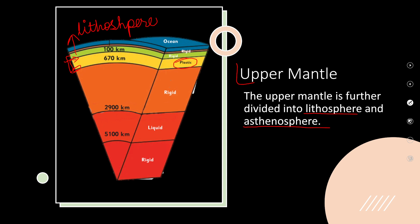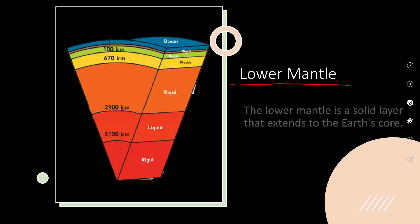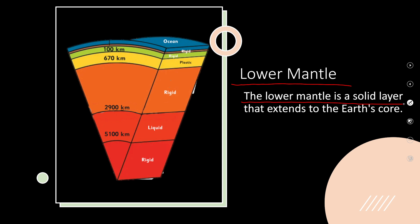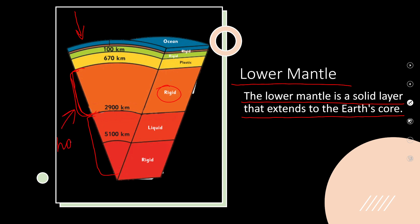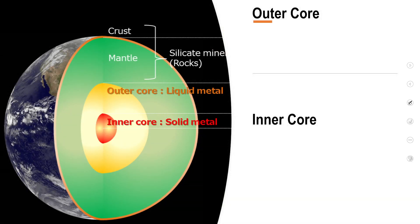The lower mantle is a solid layer that extends to the earth's core. The lower mantle is rigid - it is not liquid or molten. It is solid and rigid, with very high pressure from the top, and it is also very hot. So my dear students, now let's go deep down inside to the core.